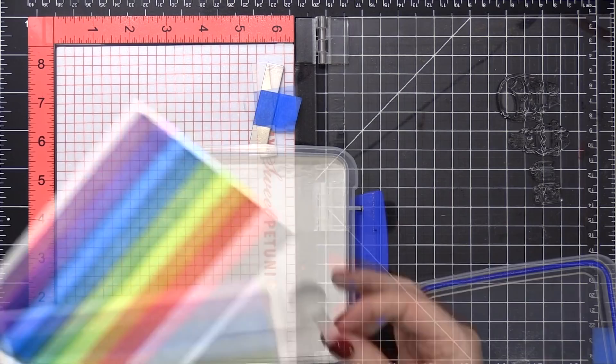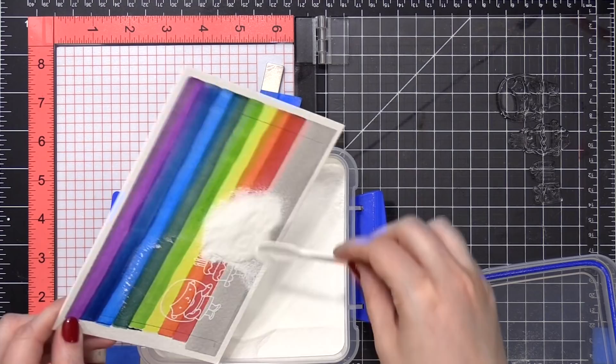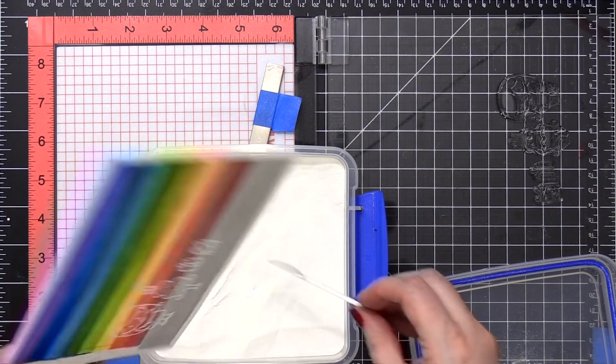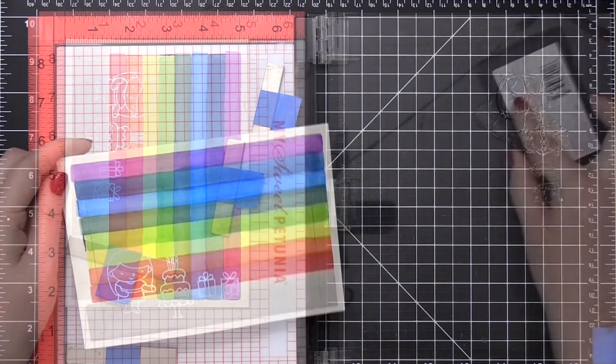I'm going to remove it from my Misti tool, and I'm going to sprinkle on some Alabaster embossing powder from Brutus Monroe. This is a nice bright white embossing powder. It's one of my favorite white embossing powders. I'm going to hit this with a heat tool until everything is smooth and melted.